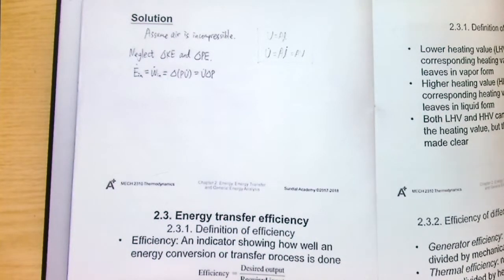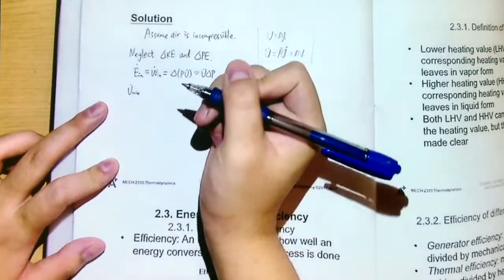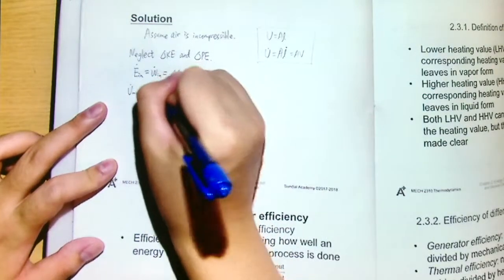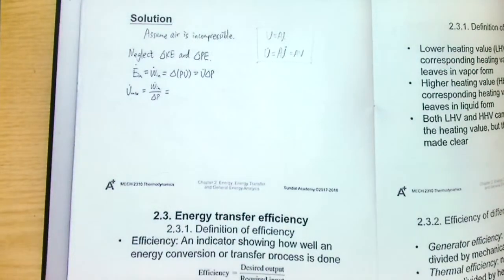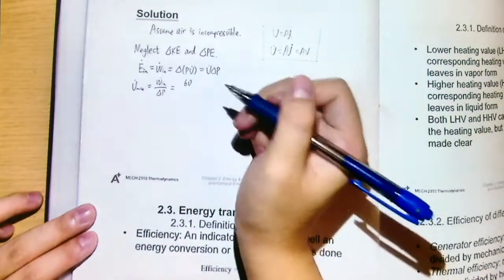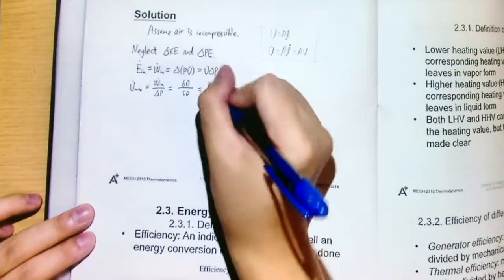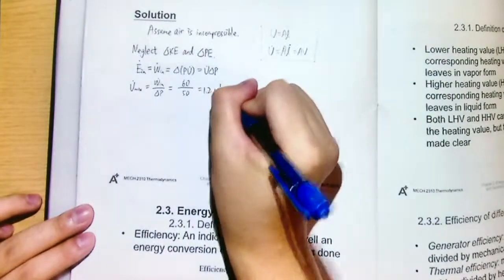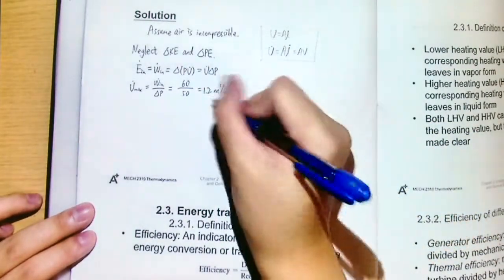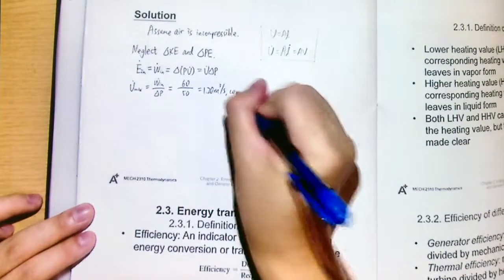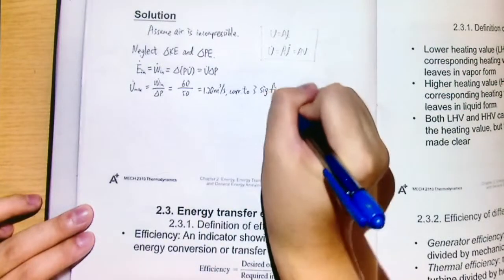So we will get the maximum volume flow rate. This V maximum should be equal to the W in dot divided by the delta P, the pressure gradient. And plug in the value: 60 W divided by 50 Pa, so we will get 1.2 meter cube per second. And that's what we get here. Or I should write this one correct to three significant figures.